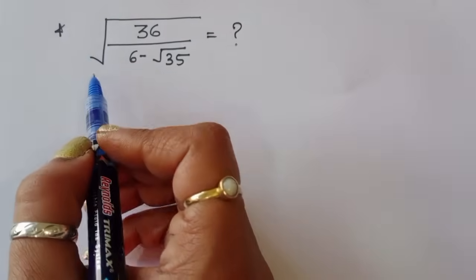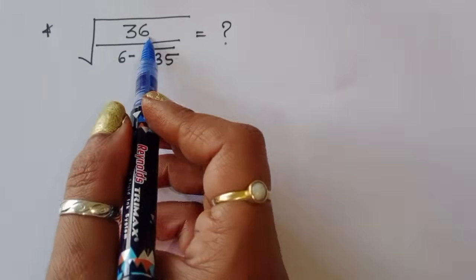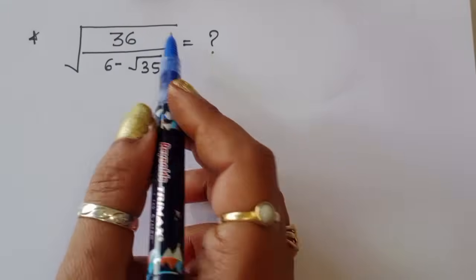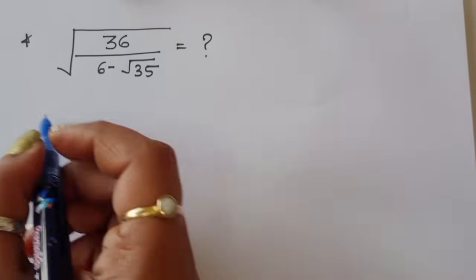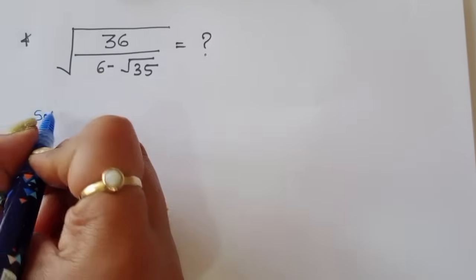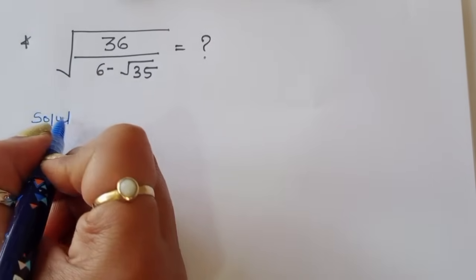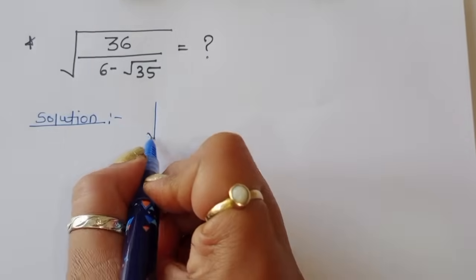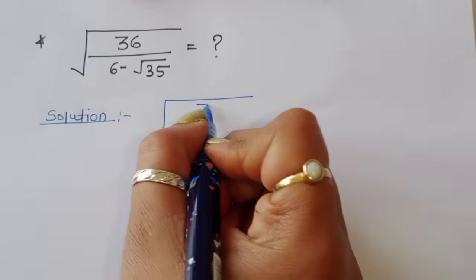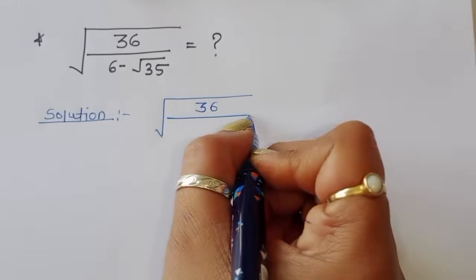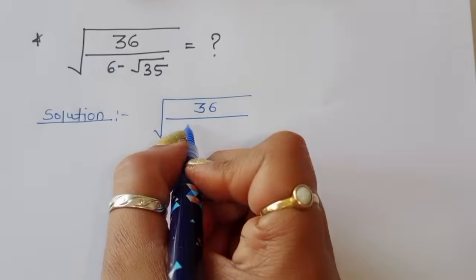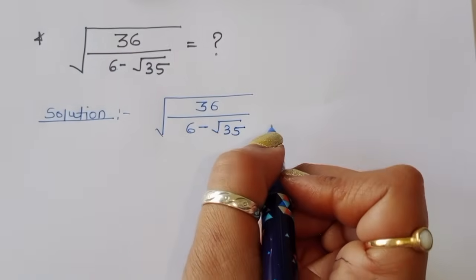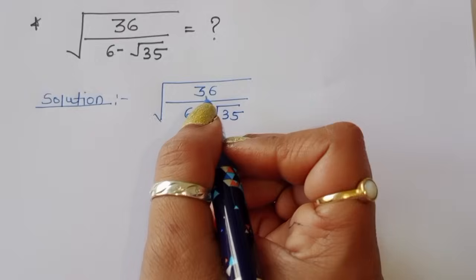The question is: find the value of the square root of 36 divided by 6 minus square root of 35. We have to find out the value of this term. Let's see the solution.